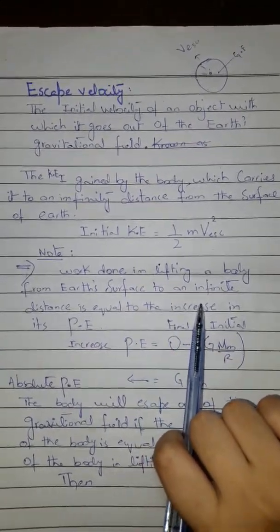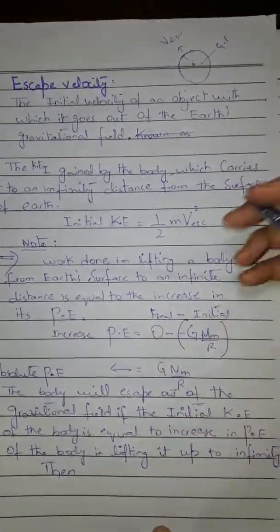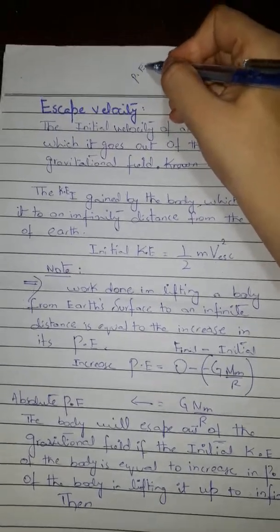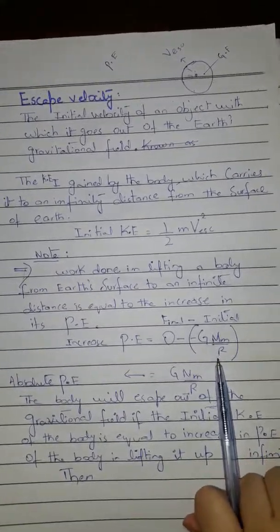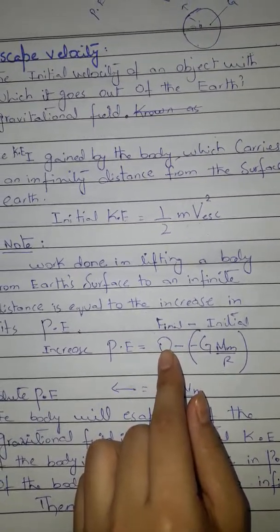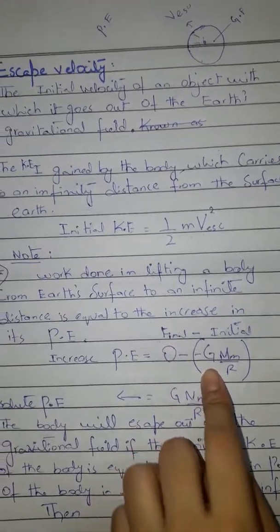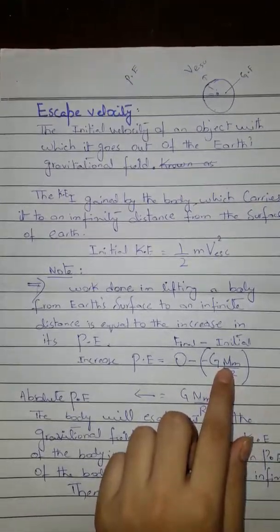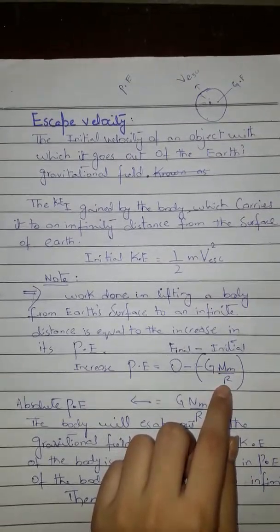The work done in lifting a body from the earth's surface to an infinite distance equals the increase in its potential energy. Whenever a height or distance is covered by the body, potential energy is involved. The increase in potential energy equals zero minus (−GMm/R), where the final potential energy at infinity is taken as zero. This gives us the initial kinetic energy equated to the absolute potential energy.